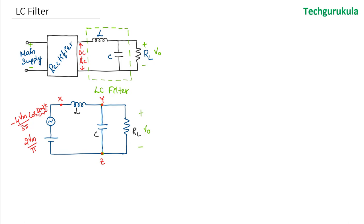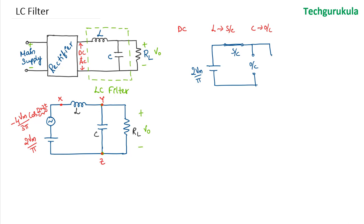Let us first analyze the DC component. For DC, the inductor is a short circuit and the capacitor is an open circuit. So the equivalent DC circuit is just the DC source 2Vm/π connected directly to the load resistor RL. The entire DC voltage drops across RL, so V_output(DC) = 2Vm/π.